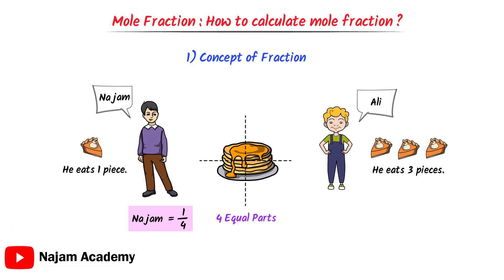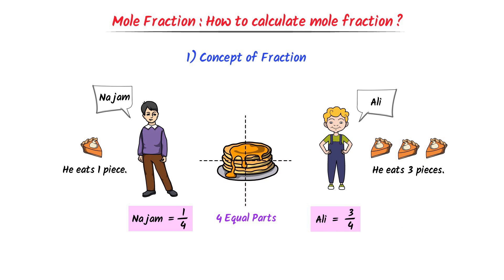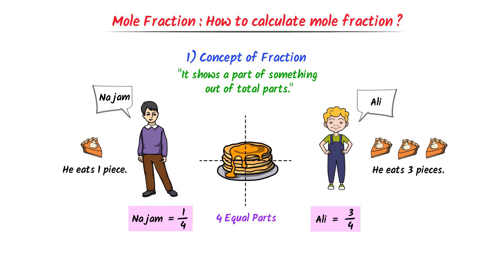Secondly, we say that in the cake, Mr. Ali's fraction, or Mr. Ali's part, is three by four, because he eats three pieces out of four pieces of the cake. Therefore, we say that a fraction shows a part of something out of total parts.